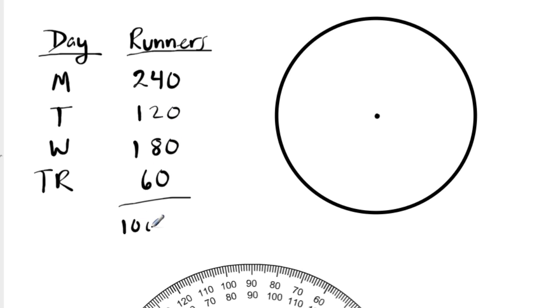20 and 80 is 100. 60 and 40 is 100. And then we have 200, 300, 400. So that means we have, over the course of this week, 600 runners.